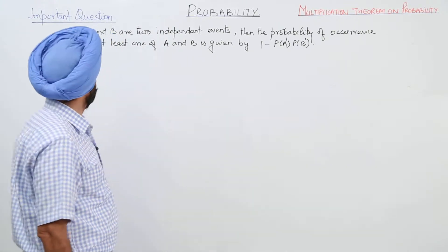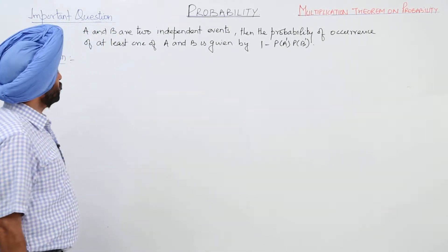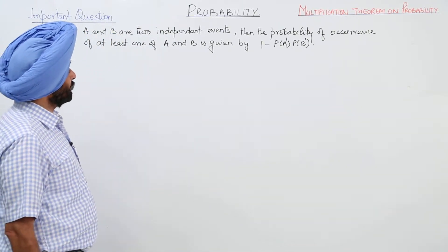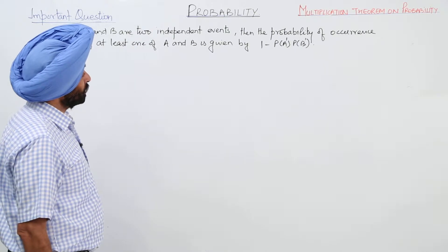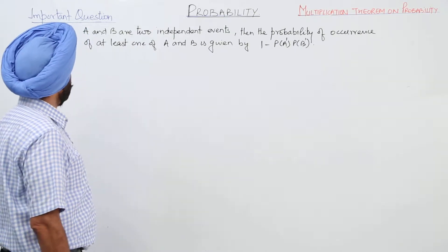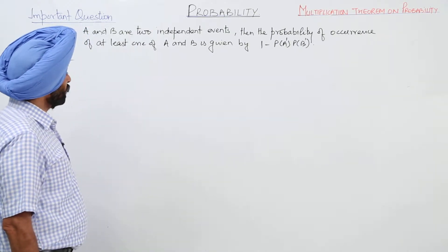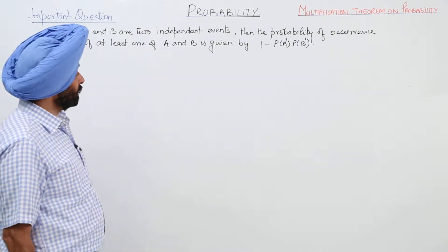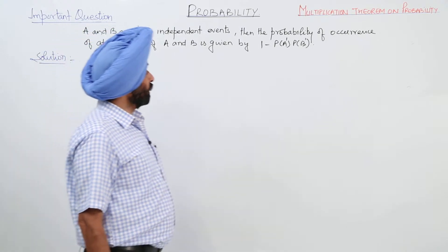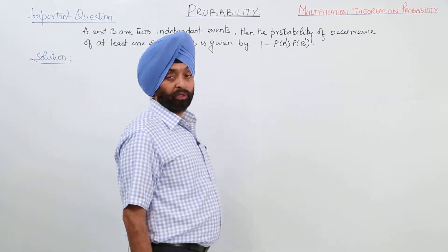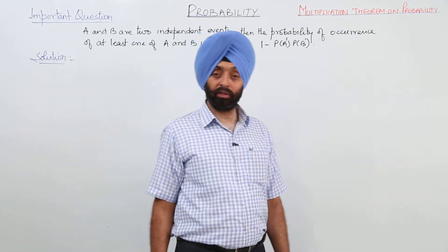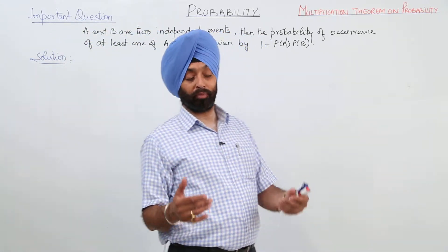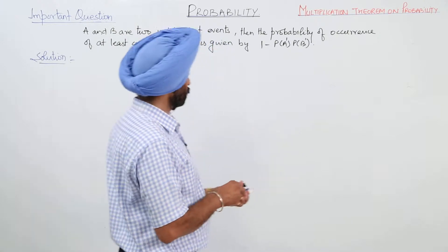An important question: A and B are 2 independent events. Then the probability of occurrence of at least 1 of A and B is given by 1 minus P(A') times P(B').